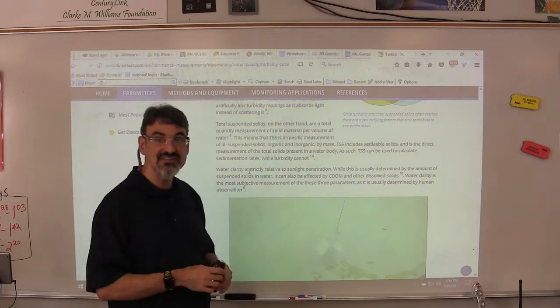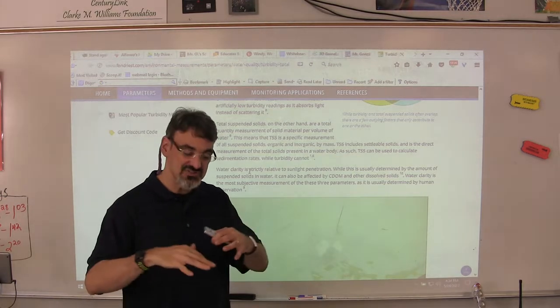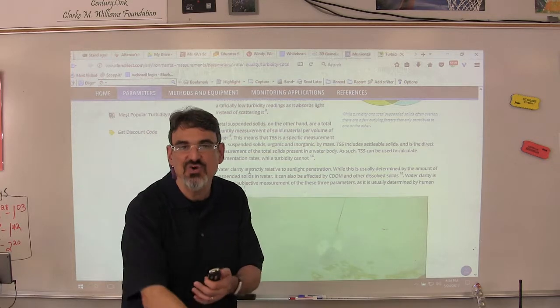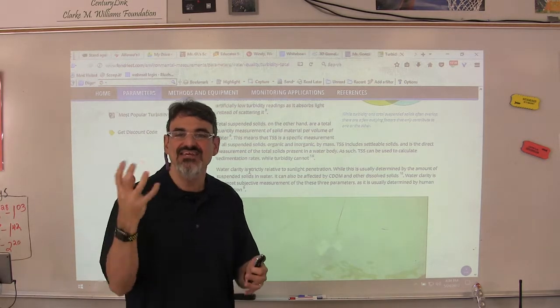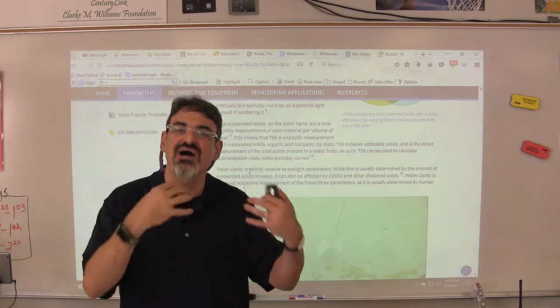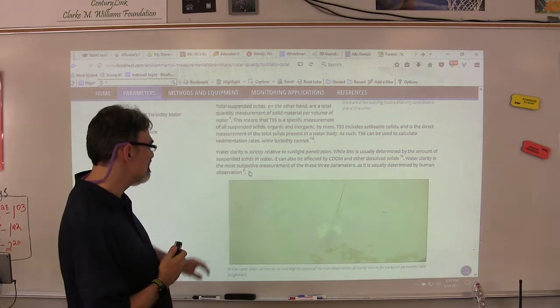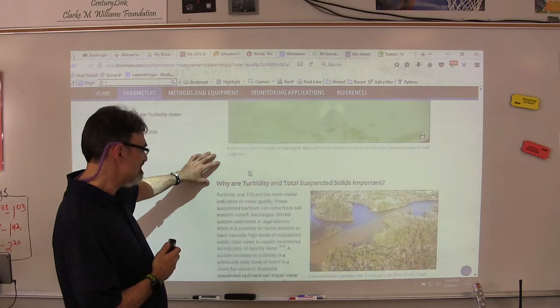Now another reason that water clarity is good especially if there's plants in the water is that clear water the sunlight can go farther and if sunlight reaches plants they can photosynthesize and put more oxygen in the water especially all the way at the bottom of the creek. So that's important.